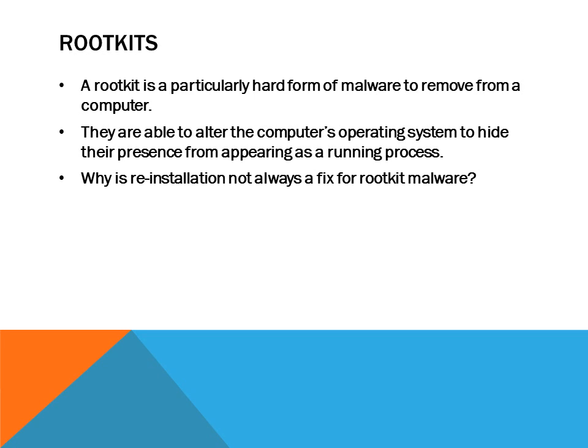The final piece of malicious software we're going to look at is a rootkit. A rootkit is a particularly hard form of malware to remove from a computer. They are able to alter the computer's operating system to hide their presence from appearing as a running process, making it harder for people to see that they are running in the background. Reinstallation is usually the best way to remove a rootkit, however it's not always going to fix this, because the rootkit can install into the computer's BIOS and start running before an operating system is even loaded. So rootkits are definitely one of the most dangerous types of malicious software that can harm your data or make it impossible for your computer to work.